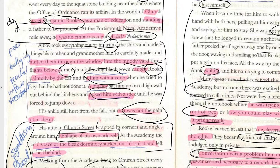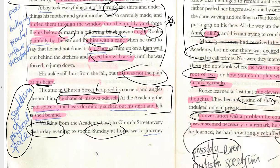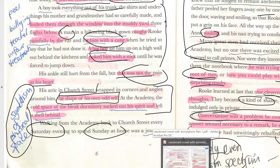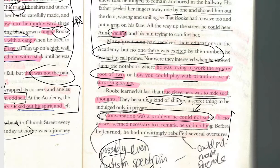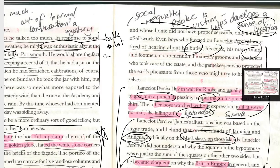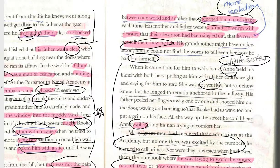Another boy forces Rook onto a wall and beats him with a stick until he jumps down — pretty terrible bullying. He describes the pain in his heart as worse than the pain in his ankle from the fall. There's a symbolism of physical space: the church street attic of his home matches the shape of his own odd self, while the academy sucks the spirit out of him. He stays at the academy all week and comes home only on Saturday evening for one day on Sunday.